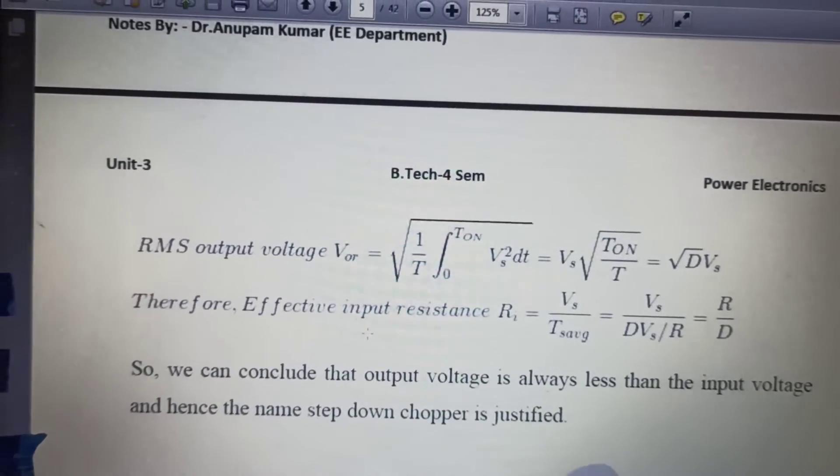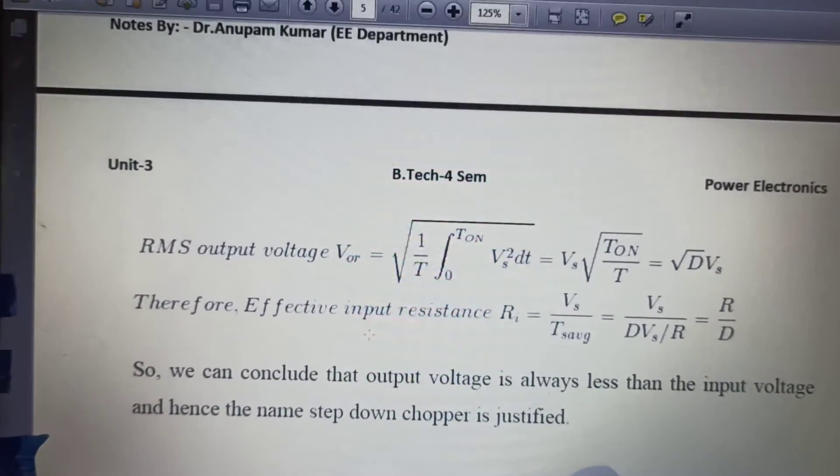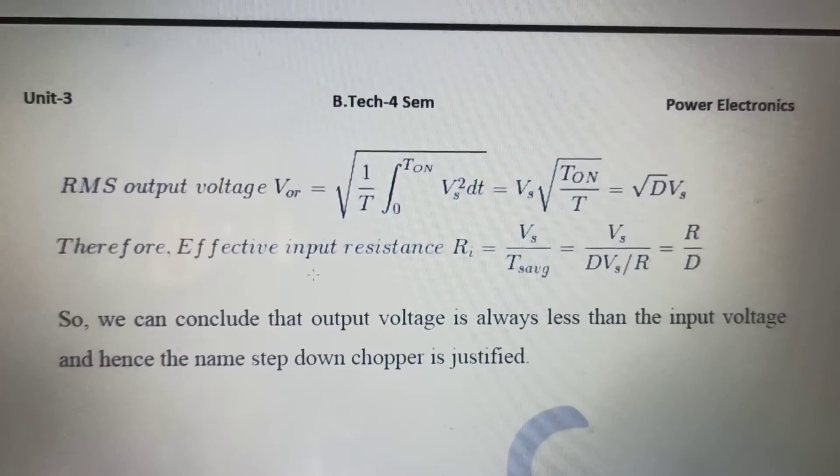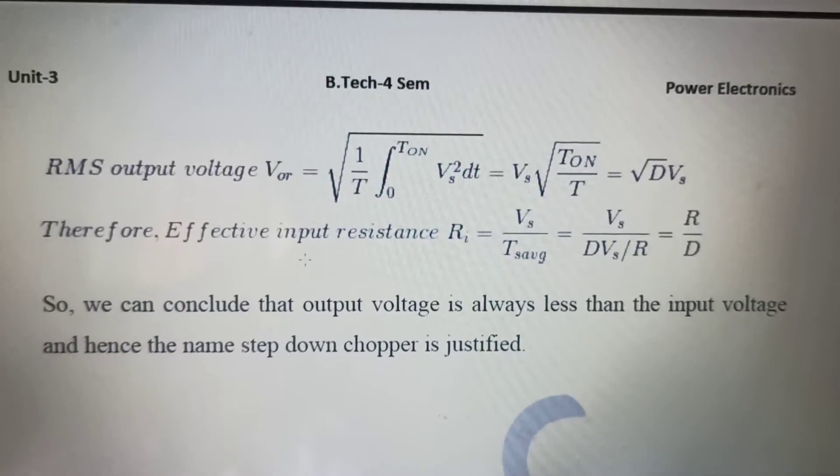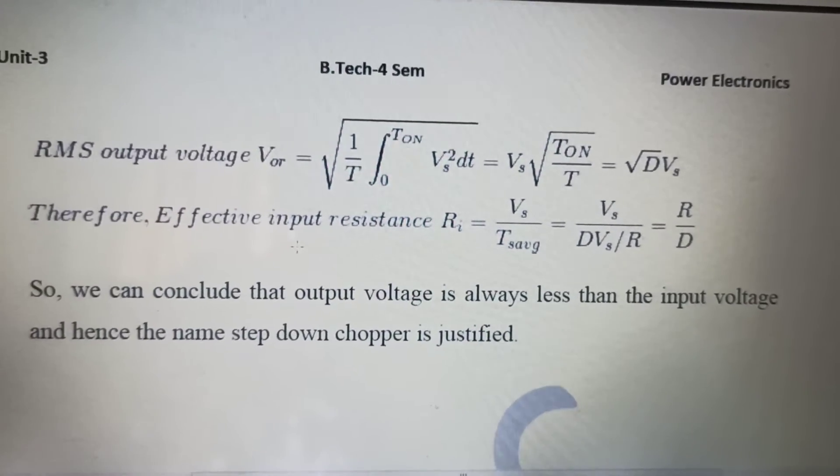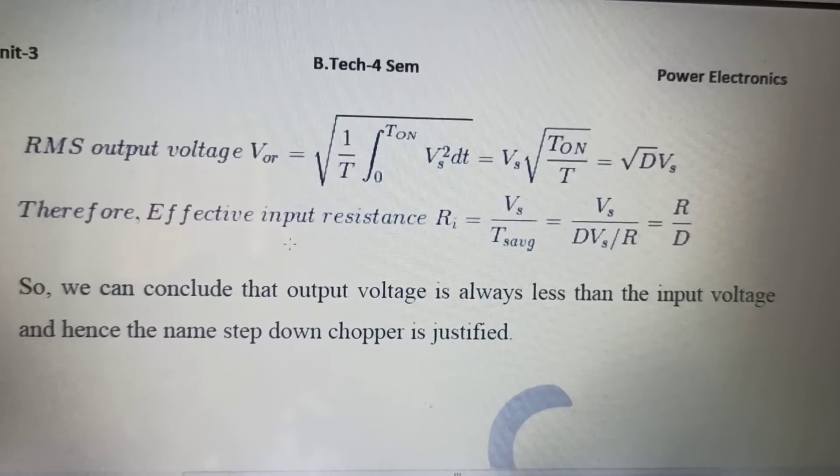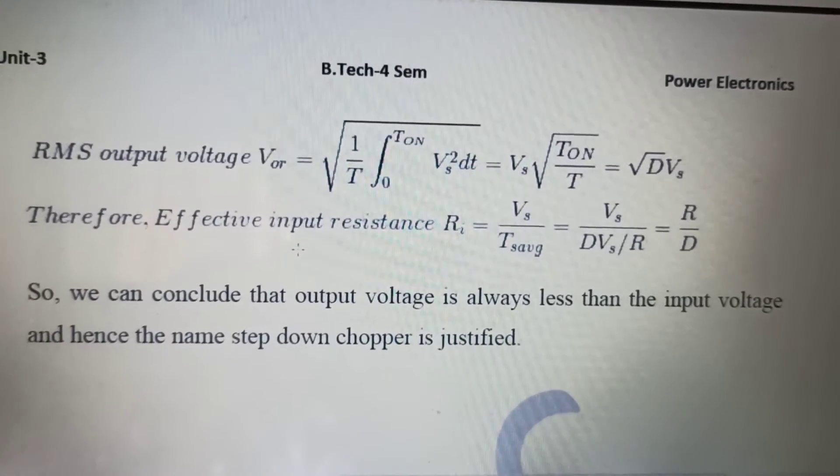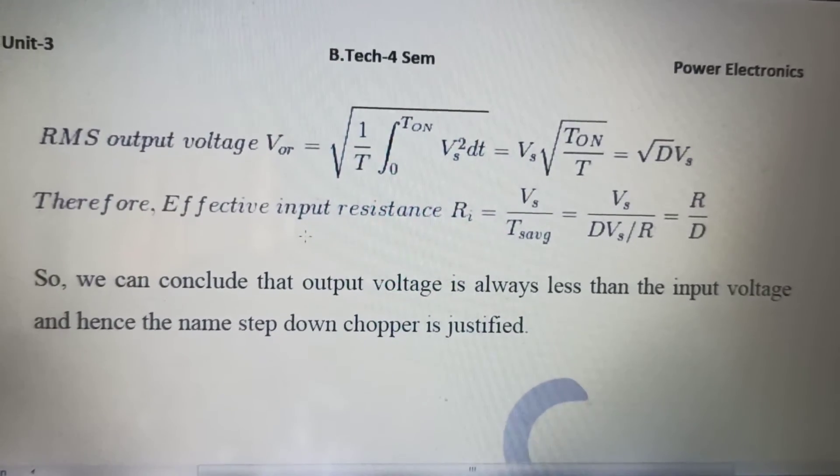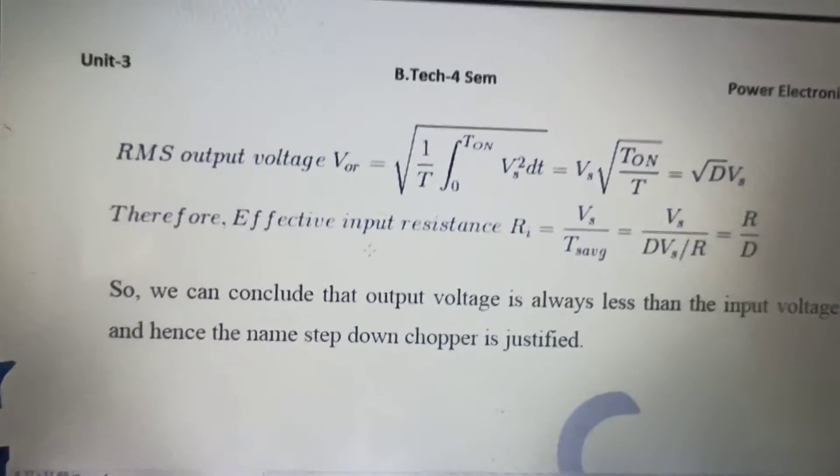And the source current for a buck converter is very easy to decide. If we know I0 then source current will only flow for a time period D. Source current will be equal to switch current. So switch current, if you are looking at RMS value, it is square root of D into I0. If you are looking at the average value then it is D into I0. I0 is the average output. I will derive all of these things in the upcoming lectures.